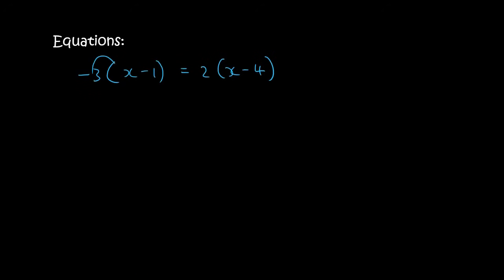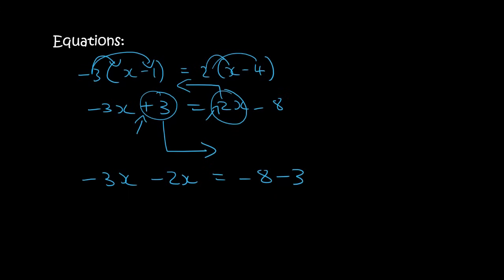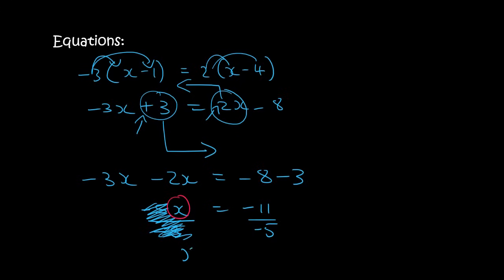With this one, get rid of the bracket by multiplying the minus 3 in: minus 3 times x gives minus 3x, and minus 3 times minus 1 gives plus 3. The other side becomes 2x minus 8. Putting all x's on the left and numbers on the right: minus 3x minus 2x, and on the right minus 8 minus 3. That gives minus 5x equals minus 11. Dividing both sides by minus 5, x equals 11 over 5. Don't stress if you end up with a fraction — it's totally okay.